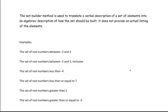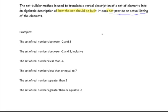In our discussion of the roster method, we learned that the set of real numbers cannot be expressed using the roster method because we cannot provide an exhaustive listing of the set of real numbers. This brings us to a discussion of the set builder method. The set builder method is used to translate a verbal description of a set of elements into an algebraic description of how the set should be built — in other words, the characteristics of the elements that belong in the set. It does not provide an actual listing of the elements. We simply need to write out the characteristics or the attributes of the elements. Let's look at a few examples.